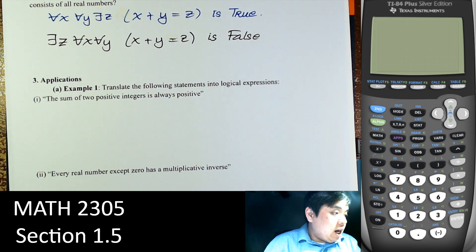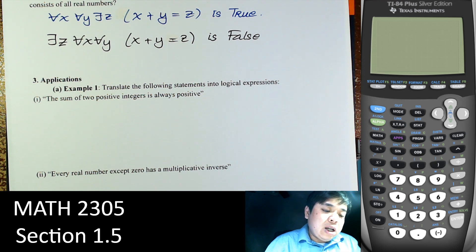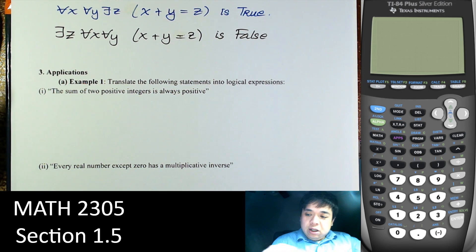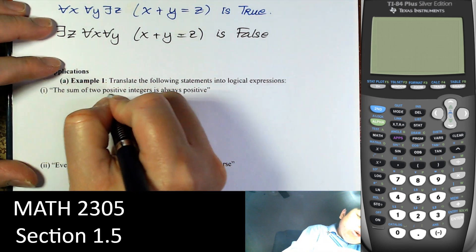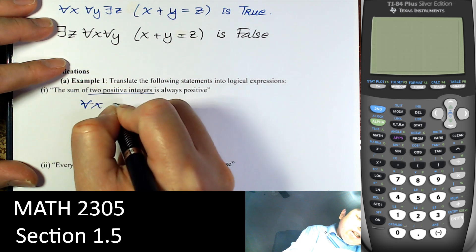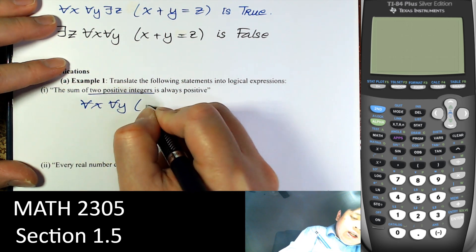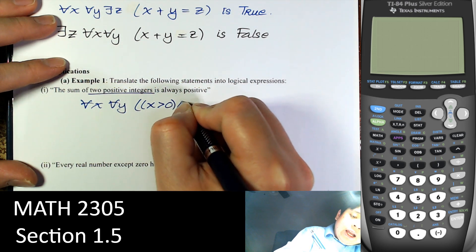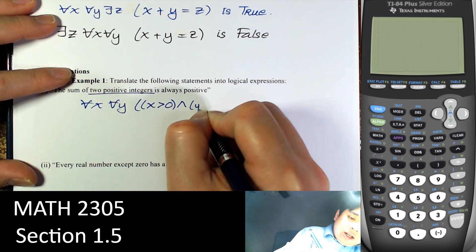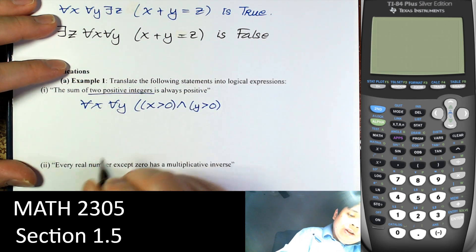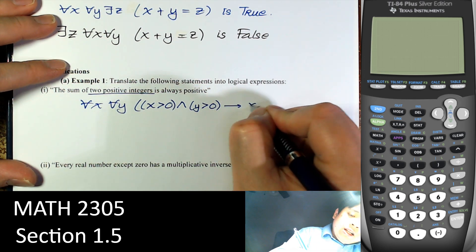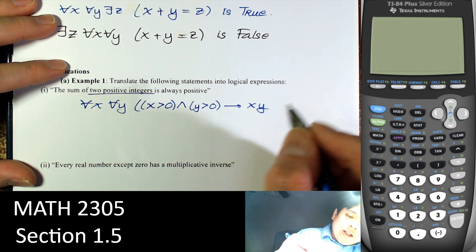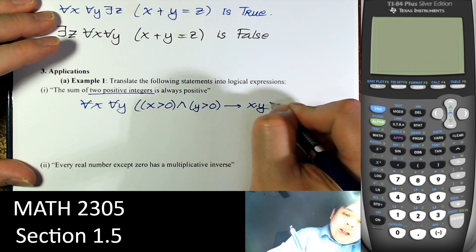Here's some application: translate the following into a logical expression. The sum of two positive integers is always positive. We can say: for every x, for every y, if x is greater than 0 and y is greater than 0, then x plus y is greater than 0. So we say for every x, every y, with domain all real numbers, x > 0 and y > 0 implies x + y > 0.